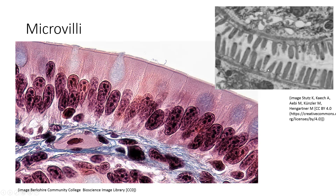Microvilli aren't motile. In fact, microvilli serve to increase the surface area of the apical surface of these cells. These are typically found in absorptive epithelia, and by increasing the surface area, we increase the amount of plasma membrane being exposed to whatever it is we're trying to absorb, making us more efficient at absorbing that thing.